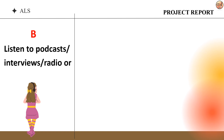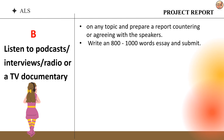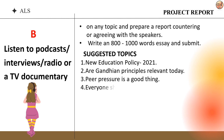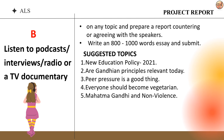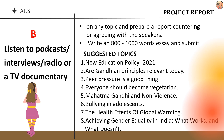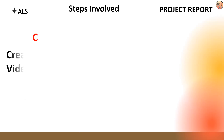The next option is listening to podcasts, interviews, radio or TV documentaries on any topic and preparing a report, countering or agreeing with the speakers. Under this activity, you will listen to your selected media and express your views for or against the event, issue or talk. Suggested topics include: New Education Policy 2021; are Gandhian principles relevant today; peer pressure is a good thing; everyone should become vegetarian; Mahatma Gandhi and non-violence; bullying in adolescence; the health effects of global warming; and achieving gender equality in India.